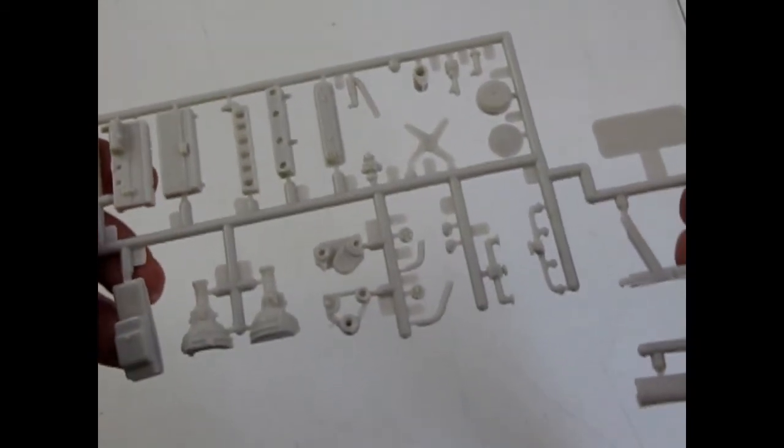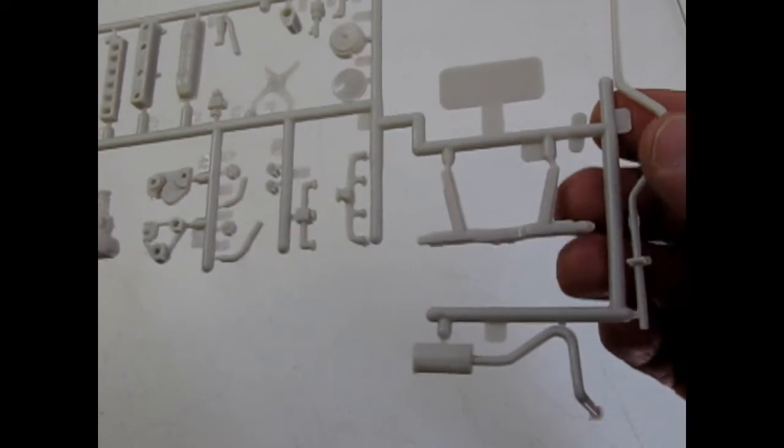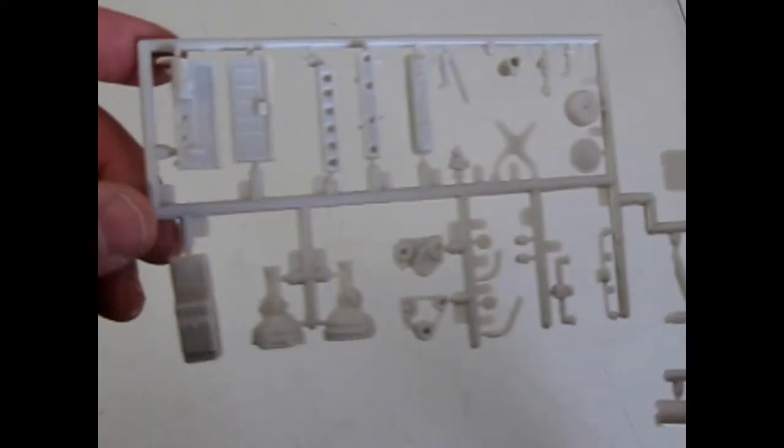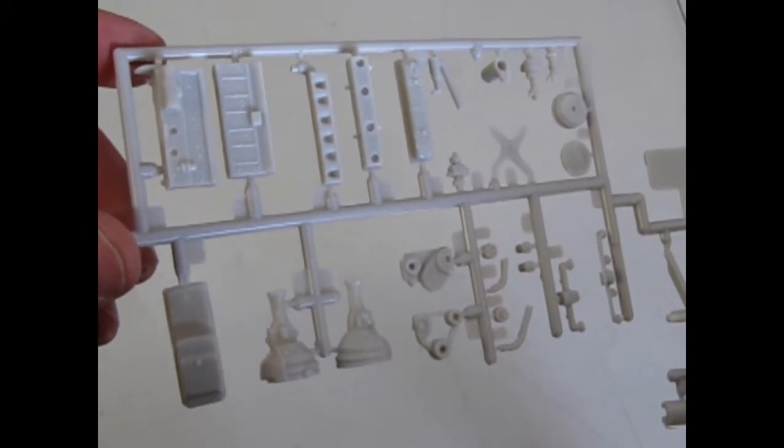And here is the Chevy inline six with some of the frame cross braces and the exhaust pipes. See the nice detail there.